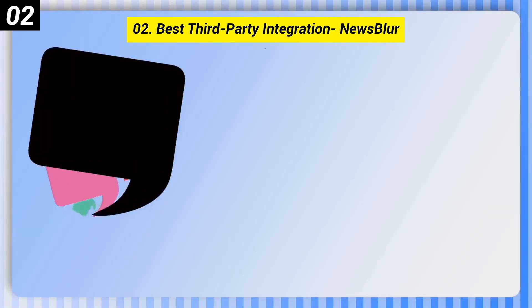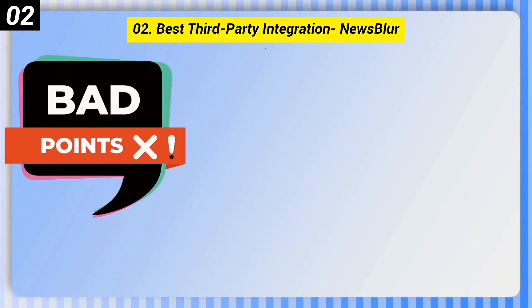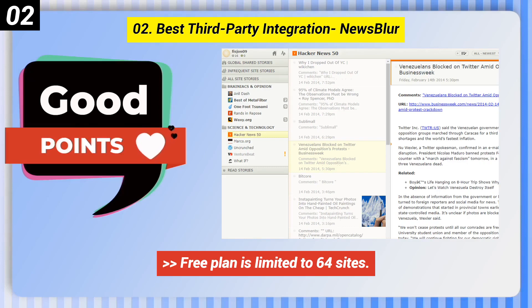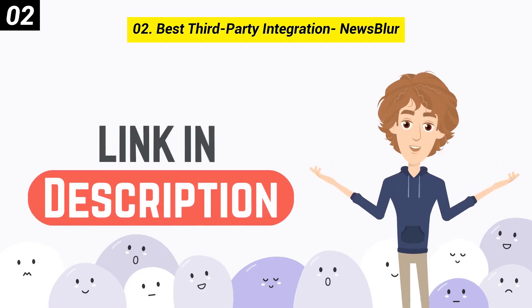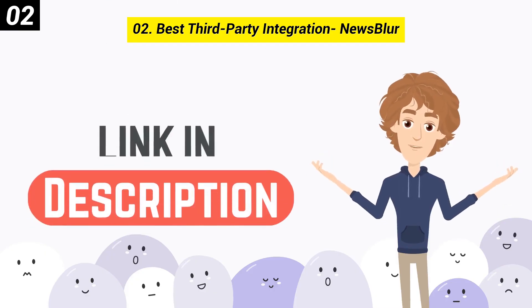Here are some bad points of Newsblur: Free plan is limited to 64 sites. Interface can get cluttered. Complicated to customize. You can check out the link in the description box.